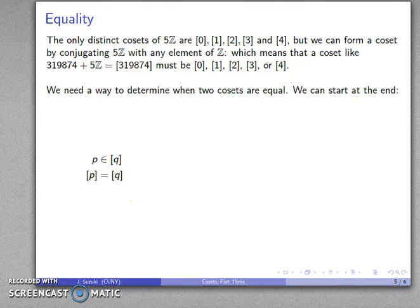There is something in both of them, and as soon as there's something in both, we know that the two cosets are equal. So I know that P is in the coset generated by Q, and, well,